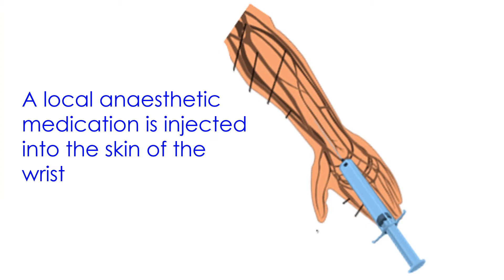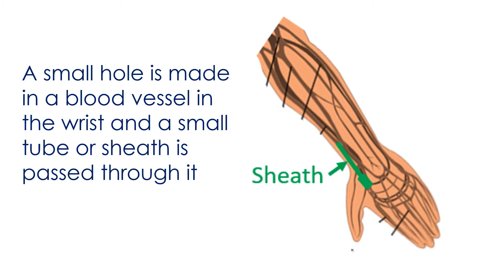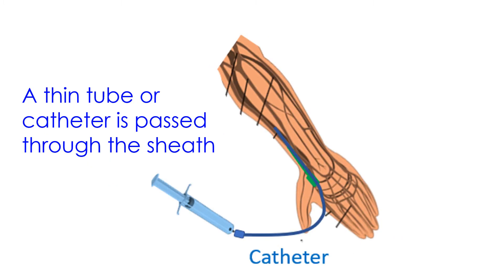A local anaesthetic medication is injected into the skin of the wrist. A small hole is made in a blood vessel in the wrist and a small tube or sheath is passed through it. A thin tube or catheter is passed through the sheath.